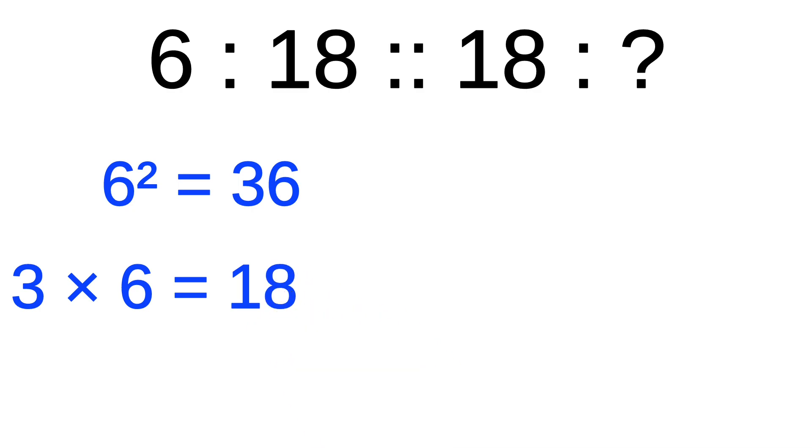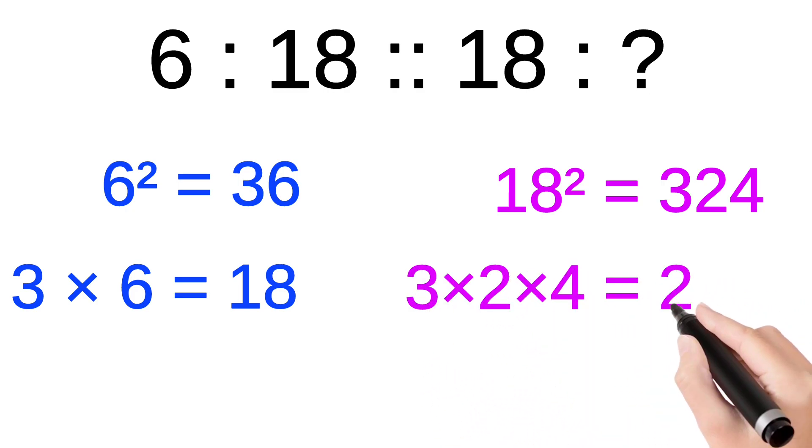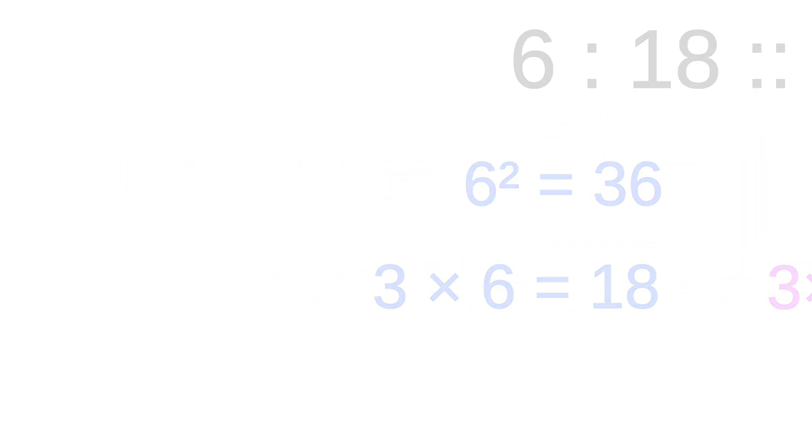Similarly, we do the square of 18, we get 324. Now we have to multiply the digits with one another, that is 3 into 2 into 4 equals 24. Therefore, option C is the correct answer.